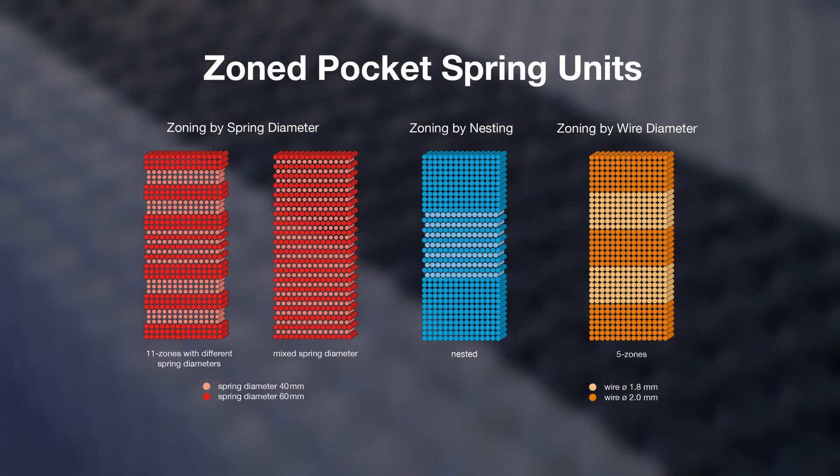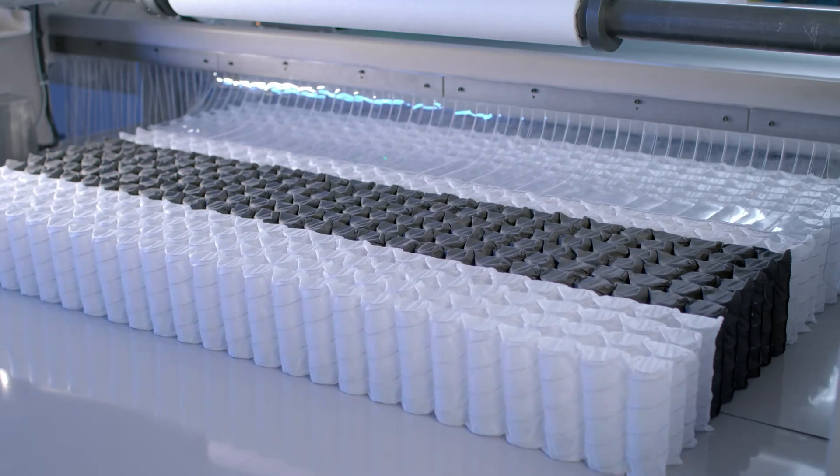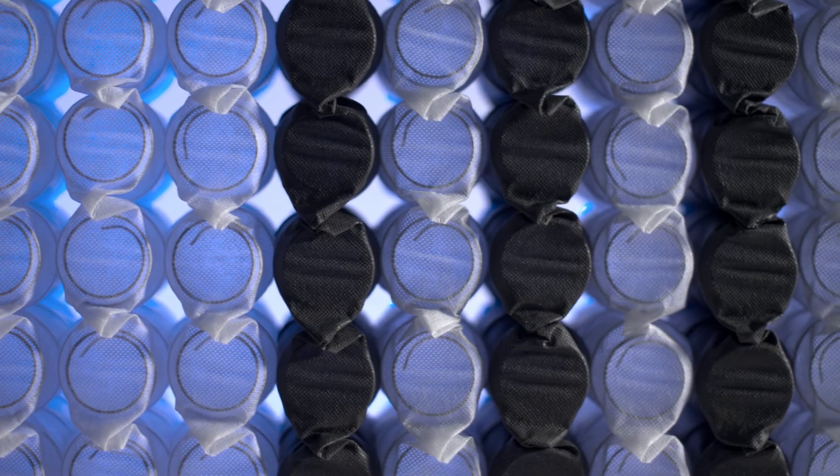Another big advantage of the FPA300 is that the system allows the production of zoned pocket spring units. That means different zones can be assembled in different assembly types and in different strengths.